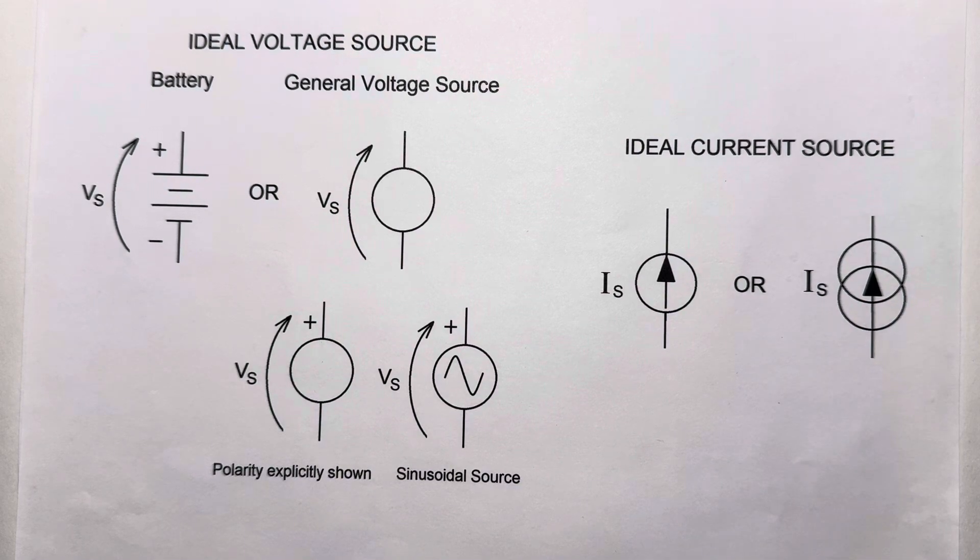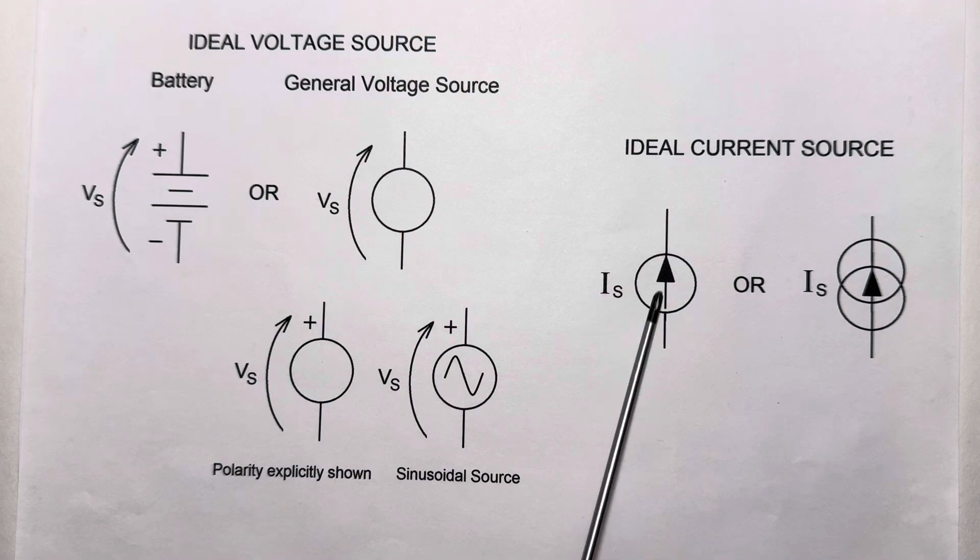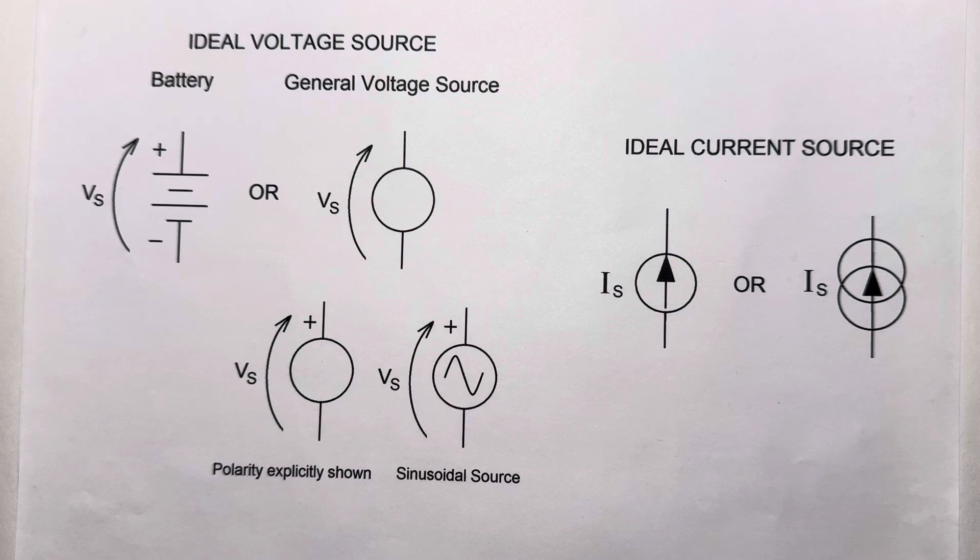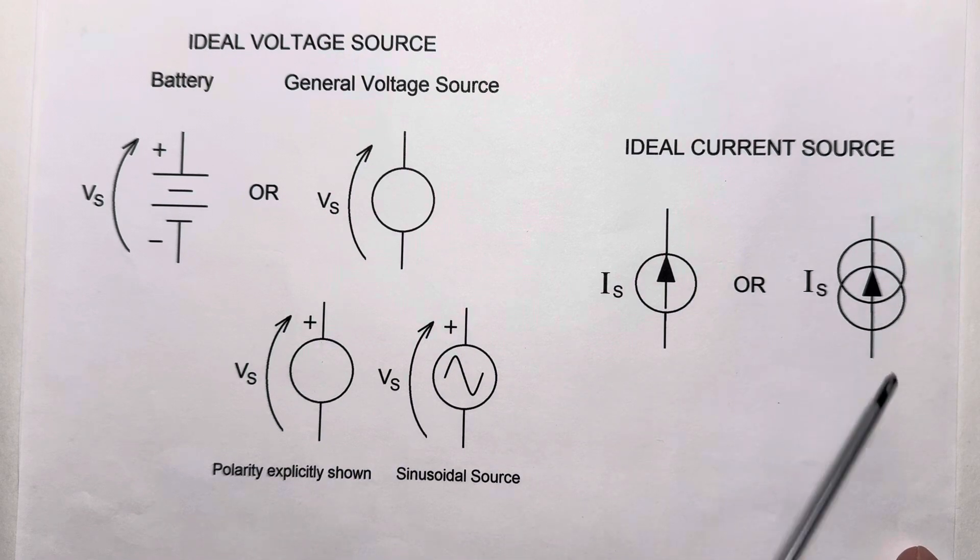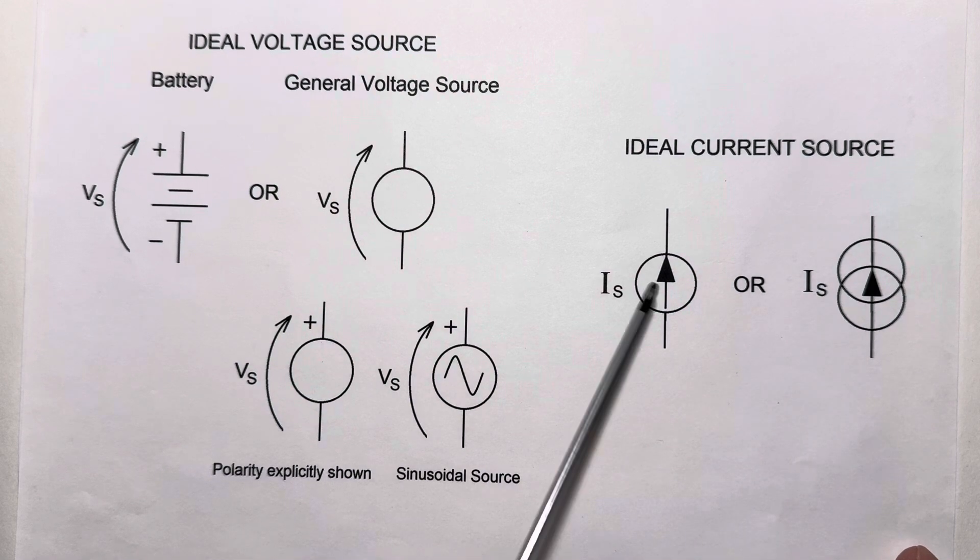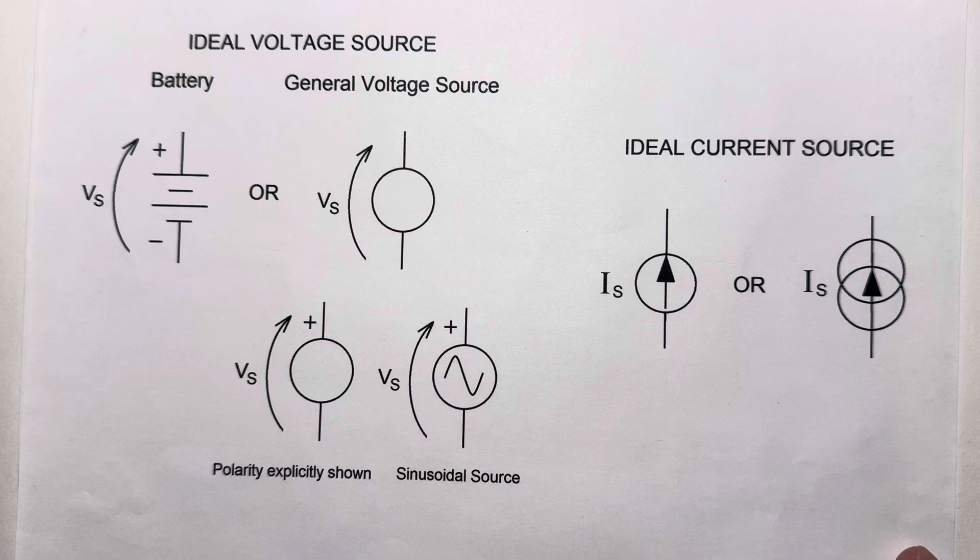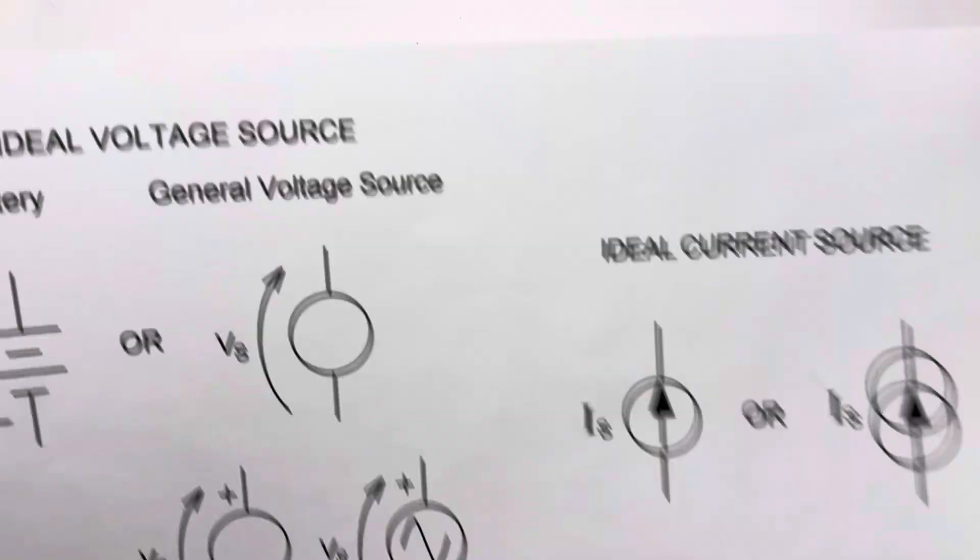Current sources are usually represented by a circle with an arrow pointing through it in the direction of current that the source forces in a network. Occasionally, you'll see this two intersecting circle version of the symbol, but that's not very common anymore. You usually see this simplified version.